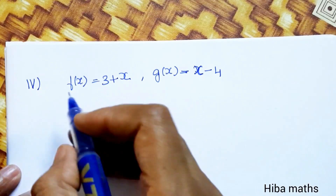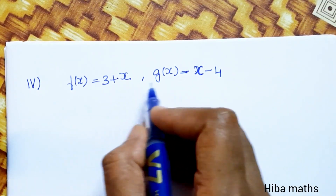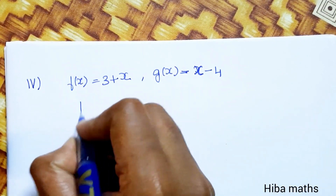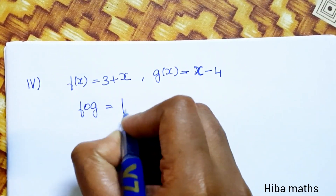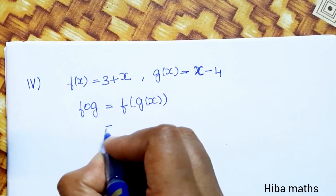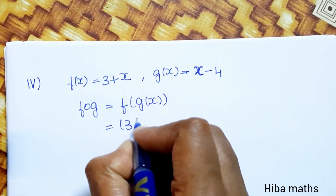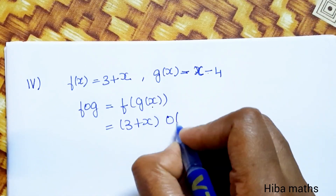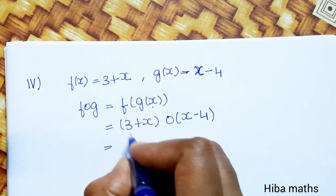Fourth question: f of x is equal to 3 plus x, g of x is equal to x minus 4. First, f of g: f inside g of x. The f function is 3 plus x, and the g function is x minus 4.